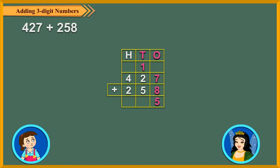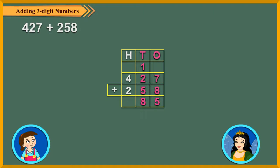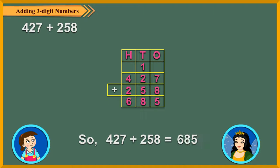Next, add the tens digits. 1 ten carried over plus 2 tens plus 5 tens is equal to 8 tens. Now finally, add the hundreds. 4 hundreds plus 2 hundreds is equal to 6 hundreds.